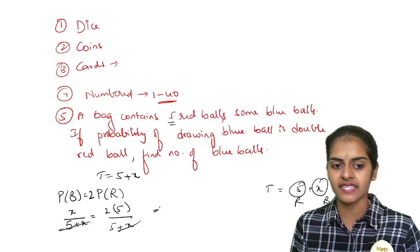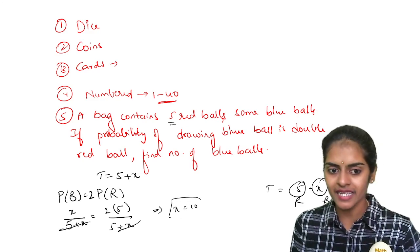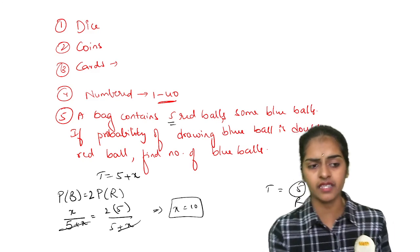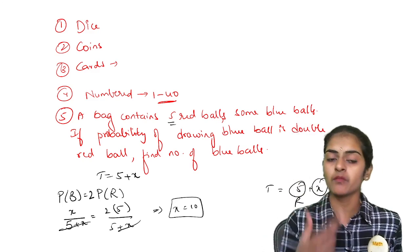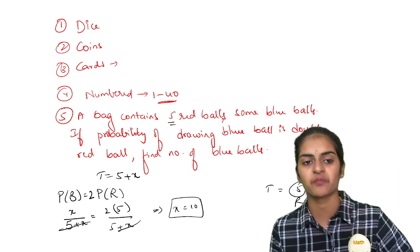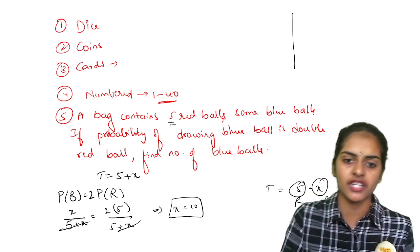5 plus x, 5 plus x gets cancelled. So x equal to will be 10. This is how you can find the probability or the number of blue balls. This is the number of blue balls I am finding here.